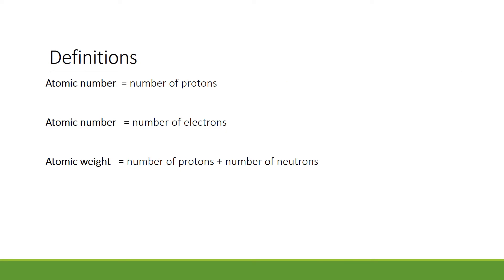We're going to be doing some calculations so these are important definitions for you to know. The atomic number of an element tells you both the number of protons and the number of electrons. The atomic weight tells you the number of protons plus the number of neutrons.